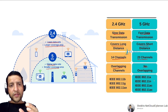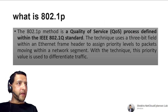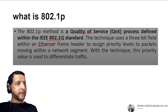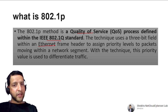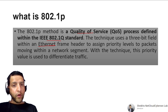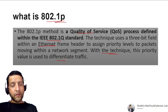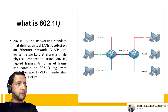802.1P is a quality of service process defined within the IEEE 802.1Q standard. It uses a 3-bit field within the Ethernet frame header to assign priority levels to packets. For example, voice traffic needs more priority than data messages. The priority value is used to differentiate traffic, determining what is most important and what should be sent first.